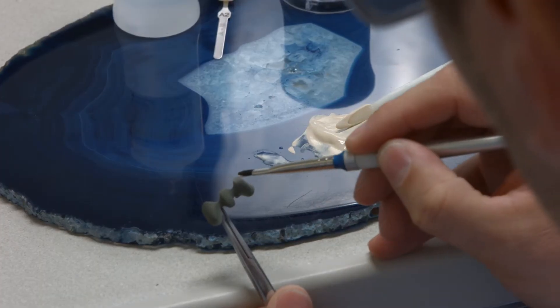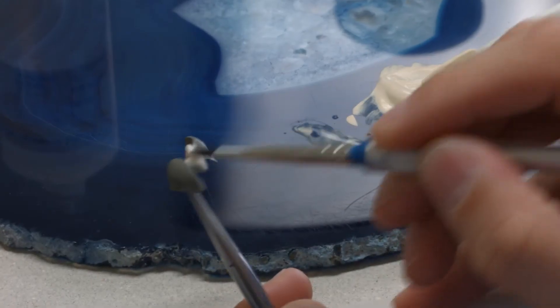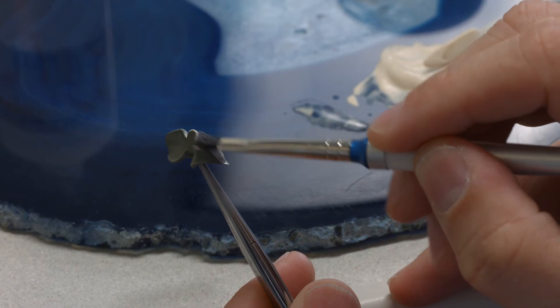Thinly apply the first opaquer layer on the clean metal framework with a brush. Agitate or vibrate it so that it settles in the micro-retentive areas.